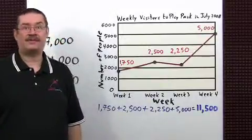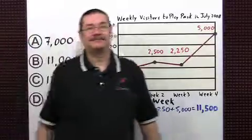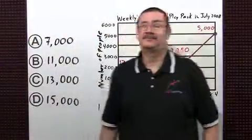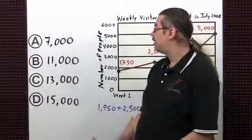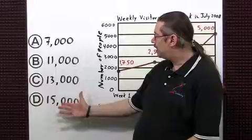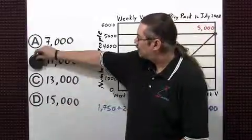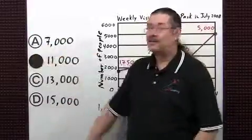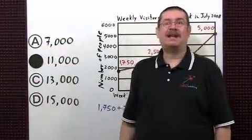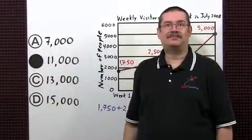Now let's take a look at our choices. The best approximation is choice B, 11,000.